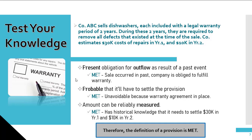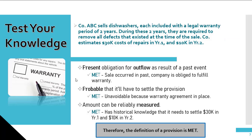Now let's test your knowledge on provisions. Company ABC sells dishwashers, each included with a legal warranty of two years. Throughout these two years, company ABC is required to remove all defects that existed at the time of the sale — it's given that this is not a separate performance obligation. Based on historical evidence, the company estimates approximately $30,000 cost of repairs in the first year and $10,000 in the second year. Let's check if the three provision criteria are met.